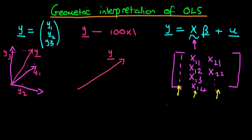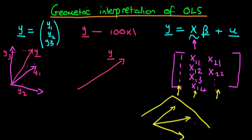If we were to essentially take each of these vectors — so we take the first vector, which is just a vector of ones, the second vector which is a vector of the second independent variable, and then the third vector which is a vector of the third independent variable — then we can think about the space which spans each of these three vectors as a sort of plane, because we're dealing in some higher-dimensional space.